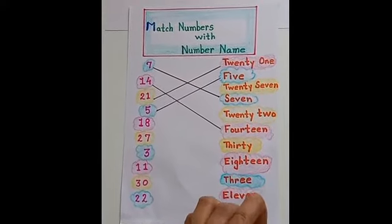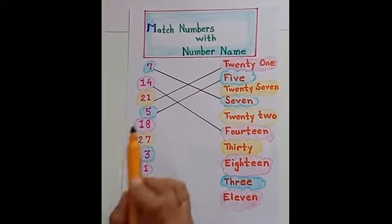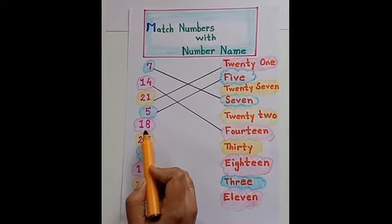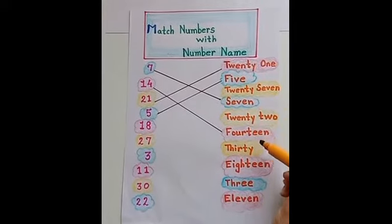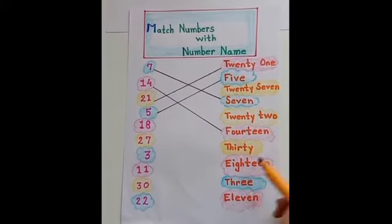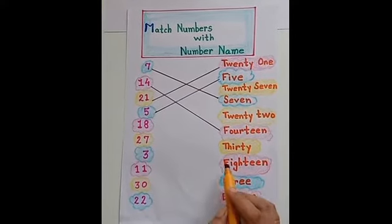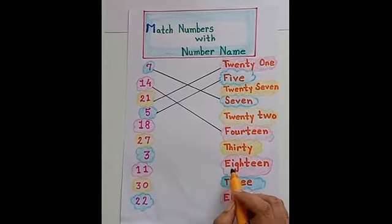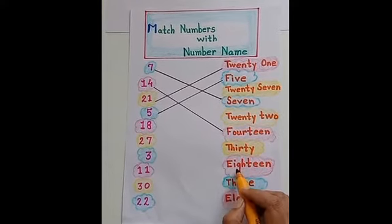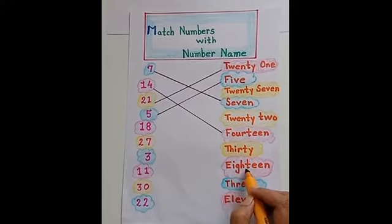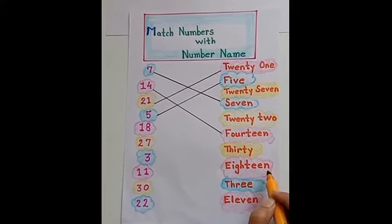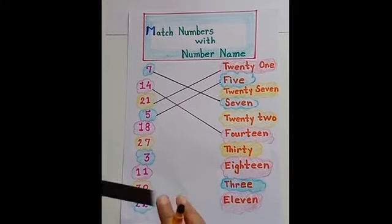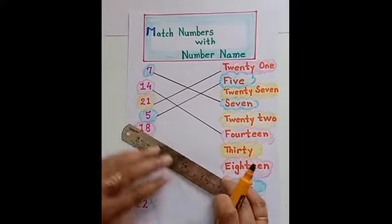Now next number is 18. Let's find out. Here it is - E-I-G-H-T-E-E-N, 18. Let's match.